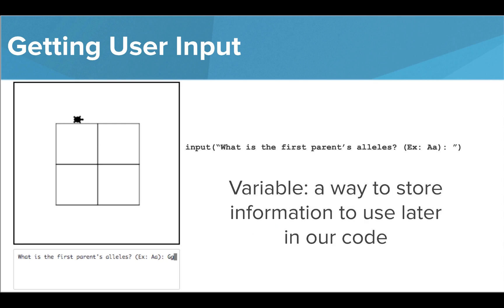Now we can see that the user has typed capital G, lowercase g. In order to use this information, we need to save it somewhere. We're going to use a variable in order to do this. A variable is just a way we can store information to use later in our code.